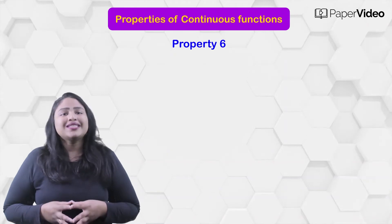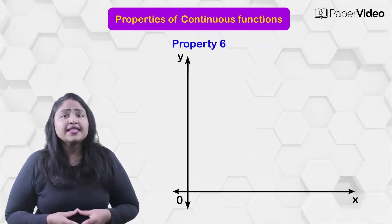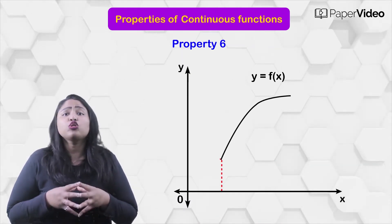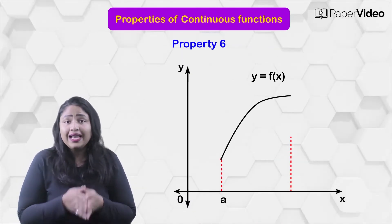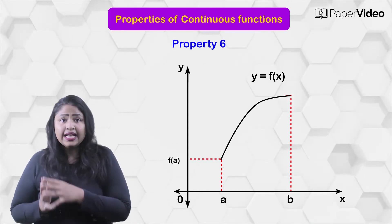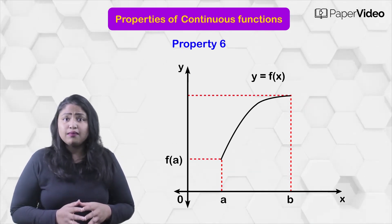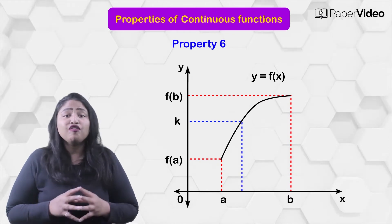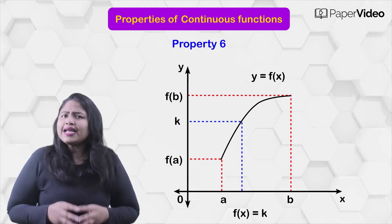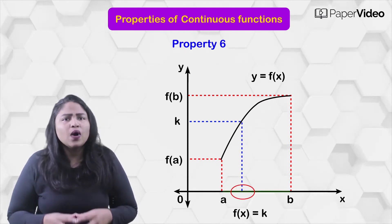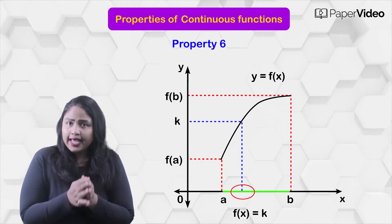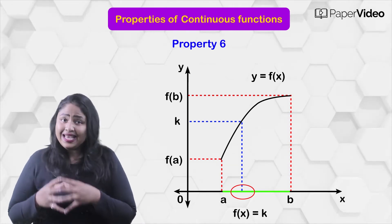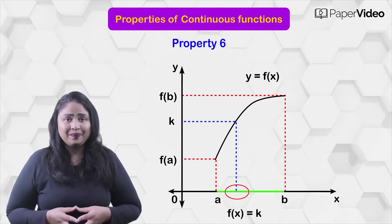According to the sixth property, if f is a continuous function defined on a closed interval [a, b] and k is any real number between f of a and f of b, there exists at least one solution of the equation f of x equals to k in the open interval (a, b).